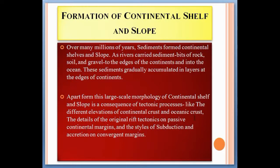Apart from this, the large-scale morphology of continental shelves and slopes is a consequence of tectonic processes, such as the different elevations of continental crust and oceanic crust, the details of original rift tectonics on passive continental margins, and the styles of subduction and accretion on convergent margins.